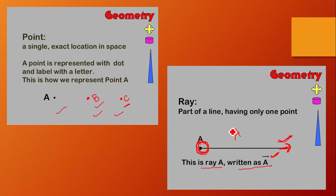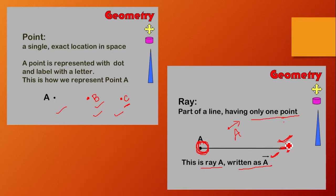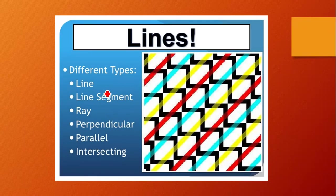This is Ray A, written with a symbolic sign over it. So what is a ray? A part of a line having only one fixed point — from one side you can extend it and from the other side you cannot. Next we have lines.